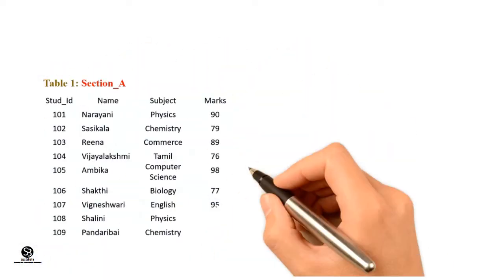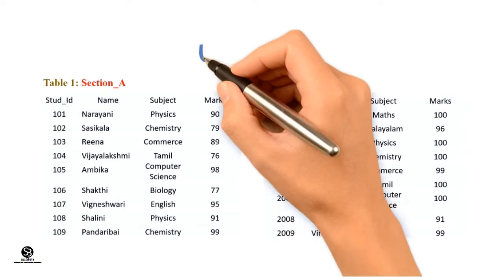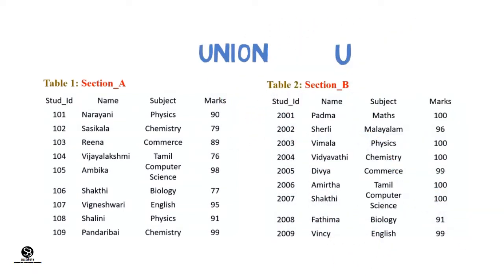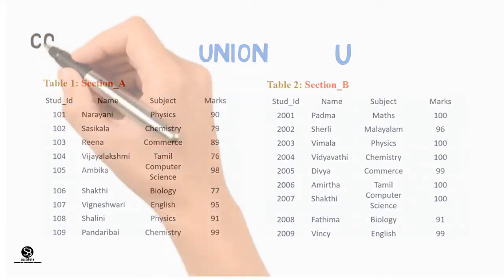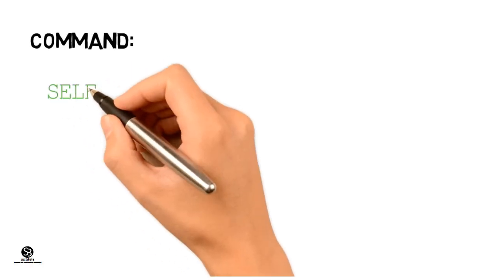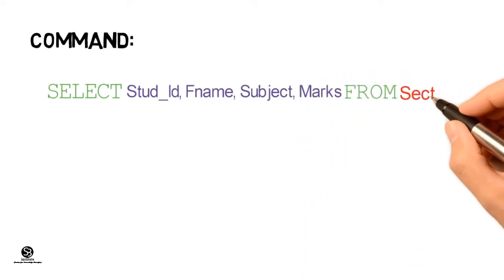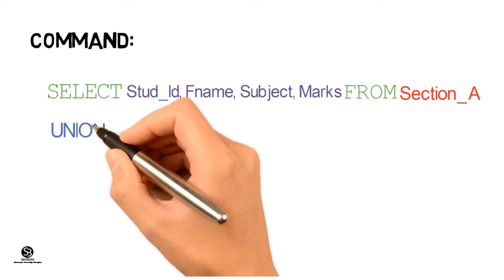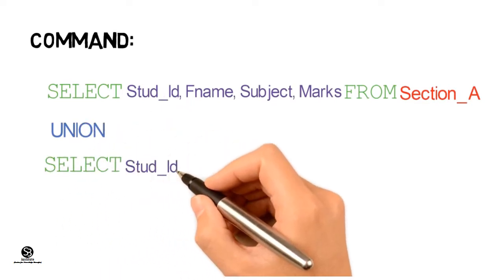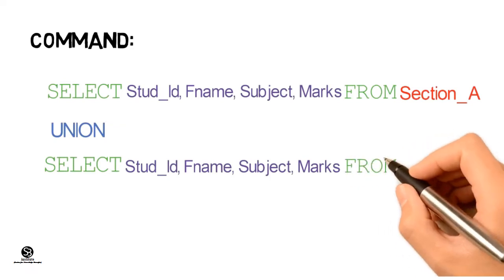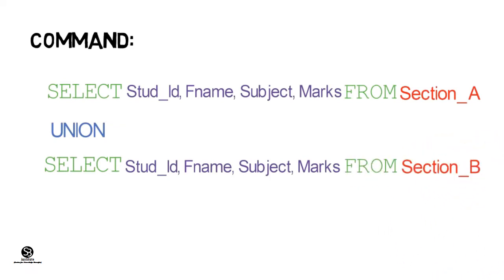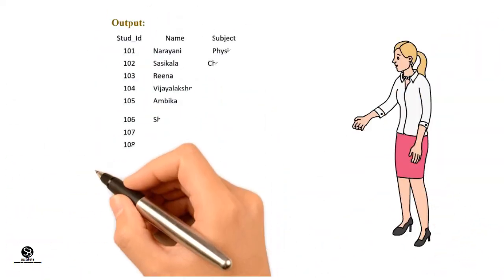There are two tables for a particular class: Section A and Section B. The teacher needs a combined list of both classes. The union operation can be implemented using SQL commands: SELECT StudentID, FName, Subject, Marks FROM SectionA UNION SELECT StudentID, FName, Subject, Marks FROM SectionB. The output will include all tuples from both tables Section A and Section B.